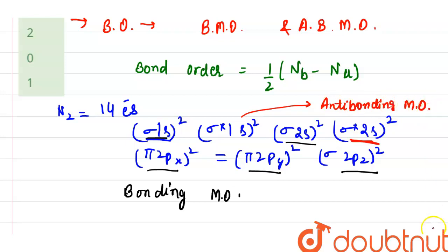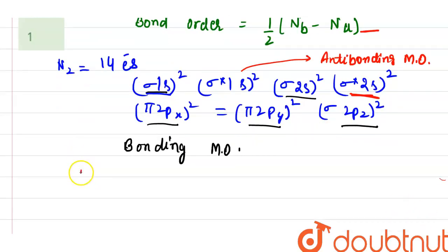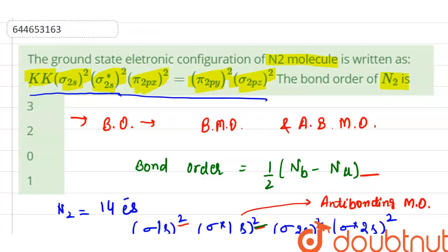So let us check the electrons and fill in this formula. Bond order equals half into bonding electrons - here count the bonding orbital electrons: 2, 2, 4, 5, 6, 7, 8, 9, 10. Here 10 electrons are present. Minus anti-bonding: 2 and 2, minus 4 here. Which is equal to 6 by 2, which is equal to 3.